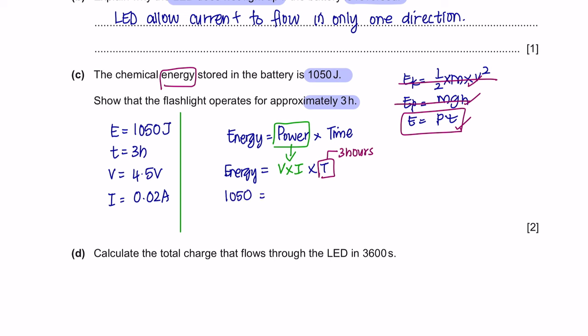Energy is 1050. Our voltage is 4.5 and the current given is 0.02. And I'm just going to leave time here as an unknown because we need to prove that it's 3 hours. From this calculation here, we would get T equals to approximately 11,000. However, this answer here is in seconds. And the question gave us in hours. So now we have to convert these seconds into hours by dividing with 3,600. And you would get 3.24 hours, which is approximately 3 hours. So there you go. You have shown that.